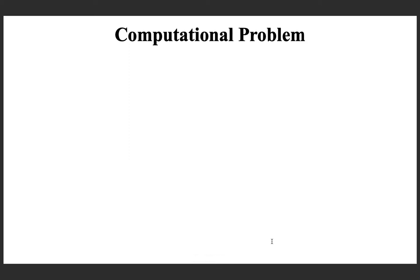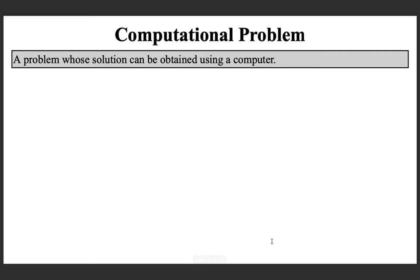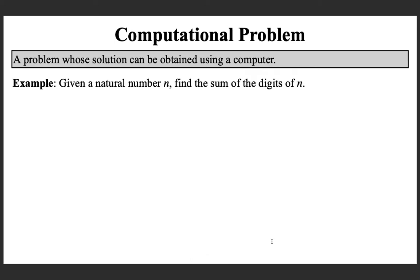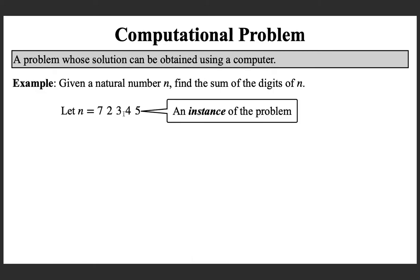Let us now see what is a computational problem. One can define a computational problem as a problem whose solution can be obtained using a computer. So if you can use a computer to solve a problem, you call it a computational problem. Let us try to understand this using an example. Given a natural number n, find the sum of the digits of n. That is the problem. Let the input n be 72,345 — this is called an instance of the problem, an input to be solved.